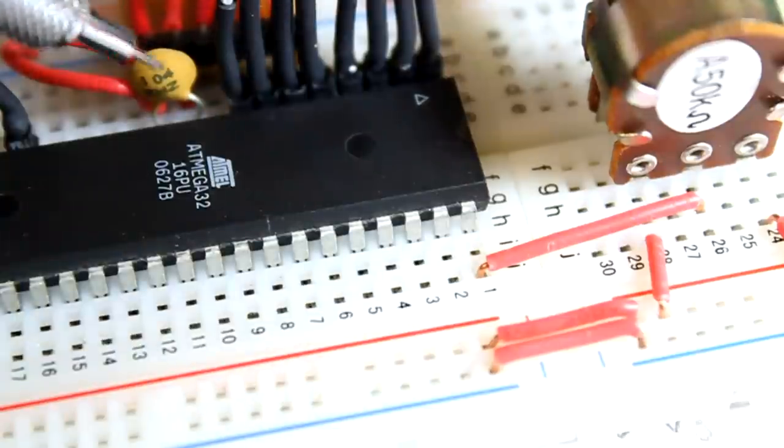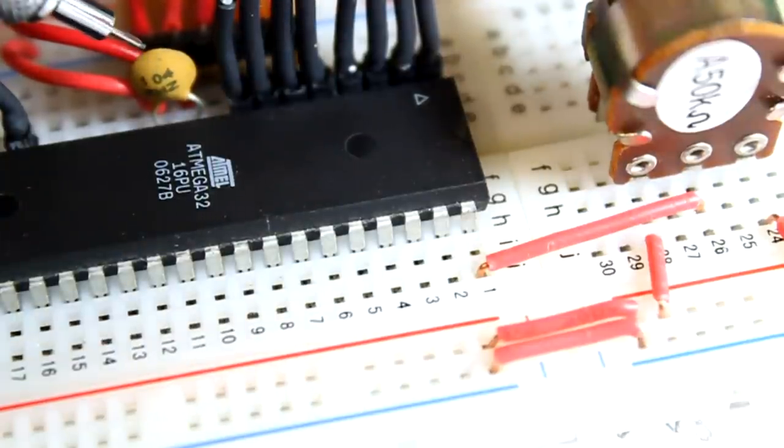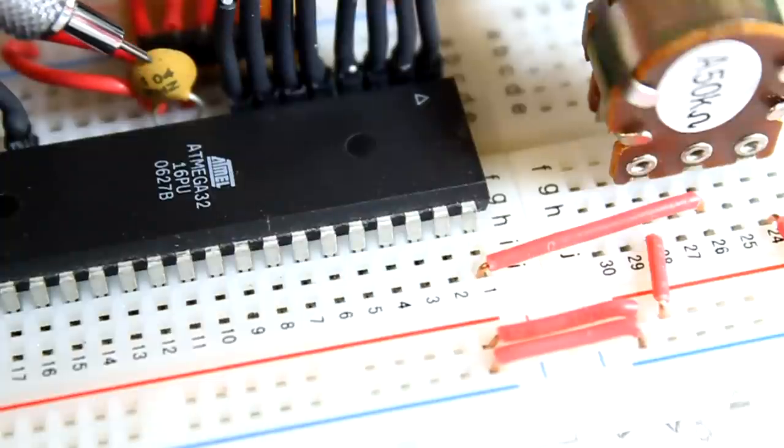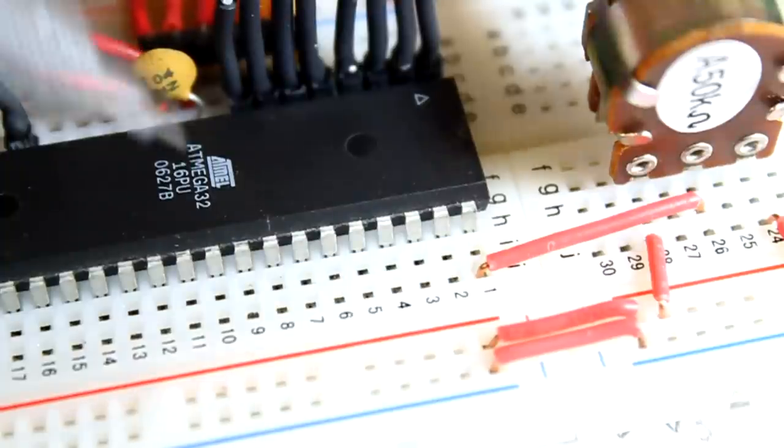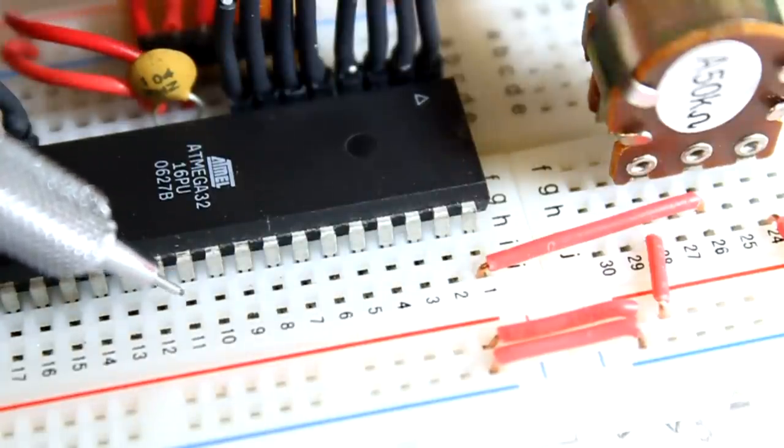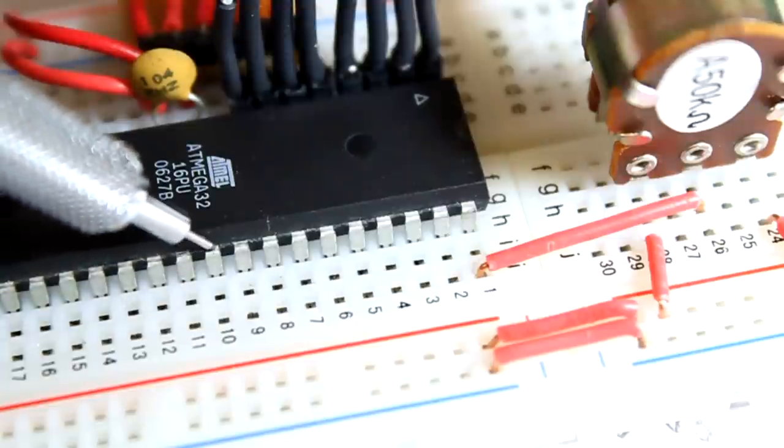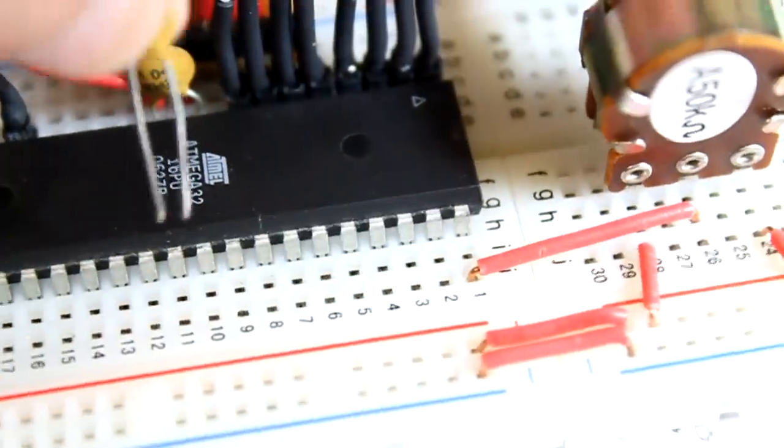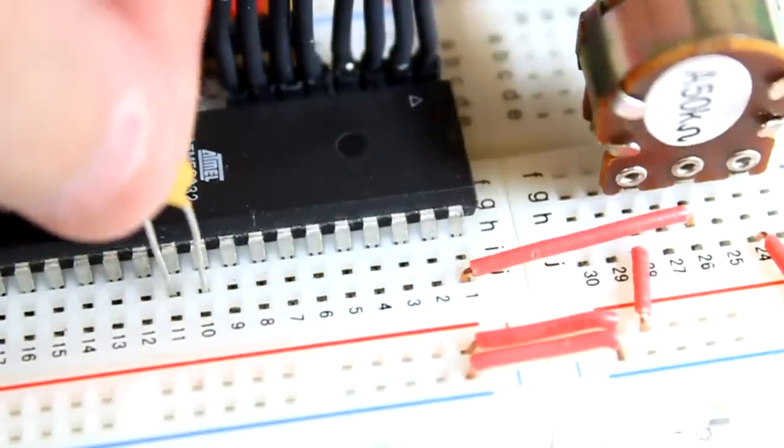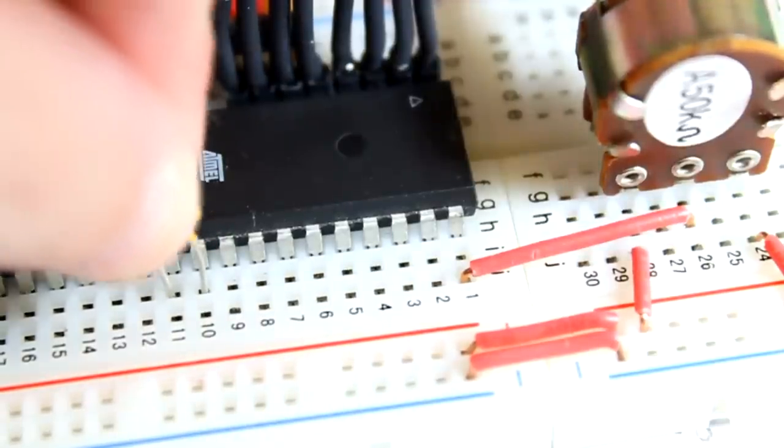We have a capacitor, a 100 nanofarad capacitor or 0.1 microfarad capacitor. We need to do that also between pins 30 and 31. Let's go ahead and do that first. So let's put a 100 nanofarad capacitor between pins 30 and 31.